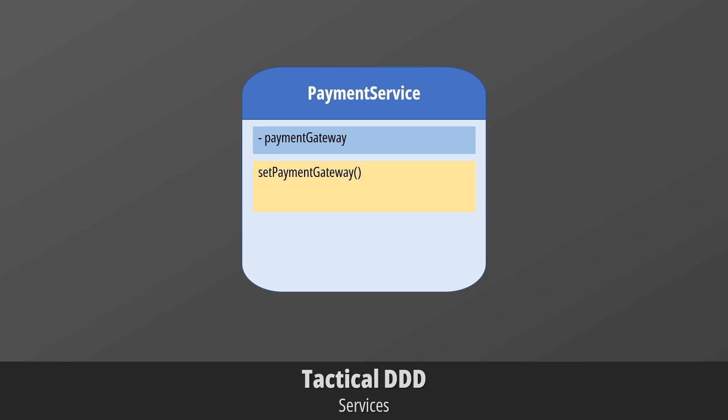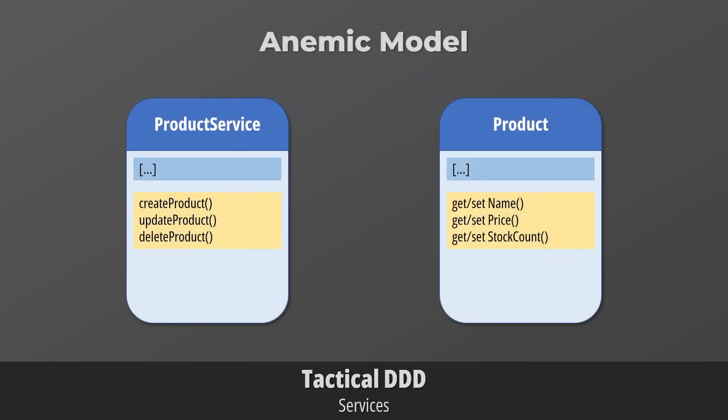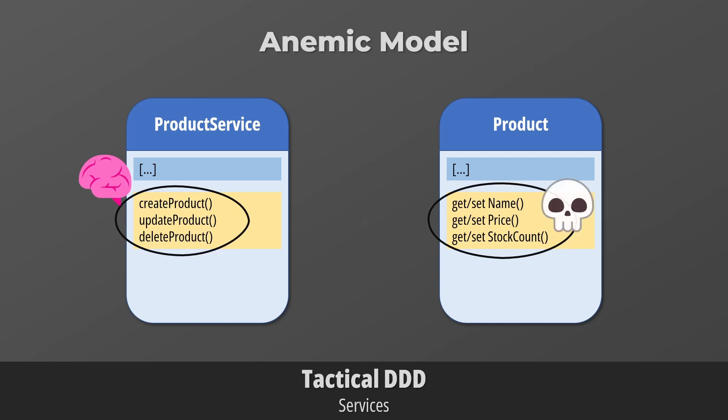We could create a service that accepts an order and payment method, performs the actual payment, and returns the transaction details. Services are very common in frameworks, but unfortunately they are also abused. It is not uncommon to see anemic models where all of the logic is stored in services, while entities are simply sterile bags of data with no behavior. This is against the core idea of DDD — entities should encapsulate behavior. An entity is responsible to protect its state from being corrupted and should not rely on an external class to do that.